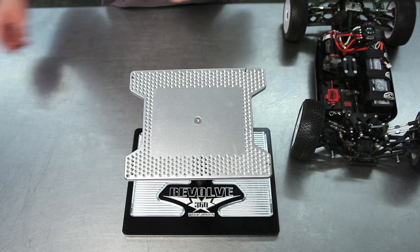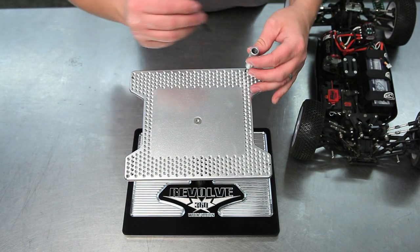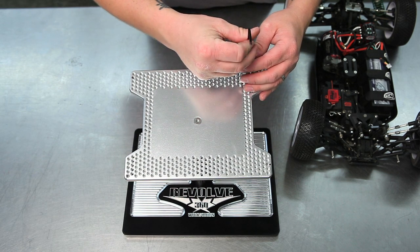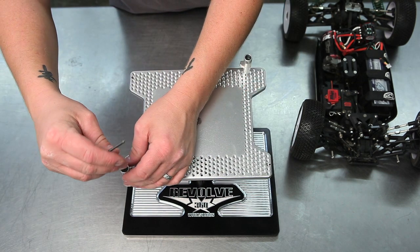Once you get your car lined up, you may want to mark the holes you want to use. To hold your car firmly, it's best to place your locking tabs diagonally from each other, one in the front and one in the rear.